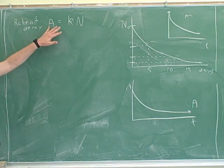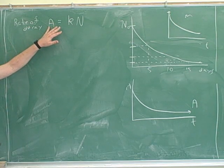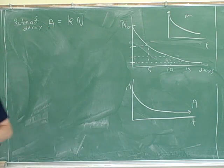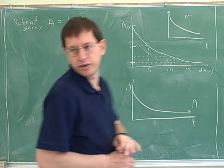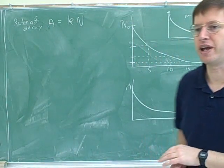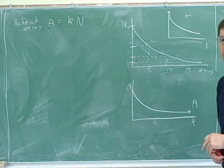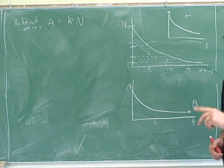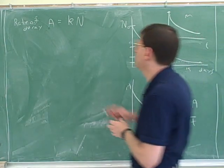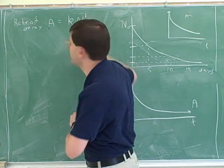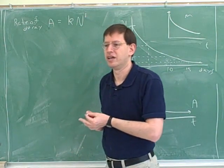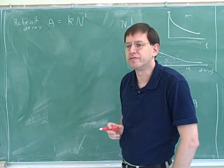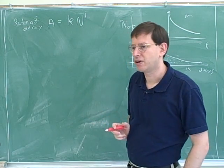So the activity is basically just the rate. Is this first order, second order, or zeroth order? First order — that's right. Why? Because the exponent here is 1. It turns out that this is first order in the number of nuclei.